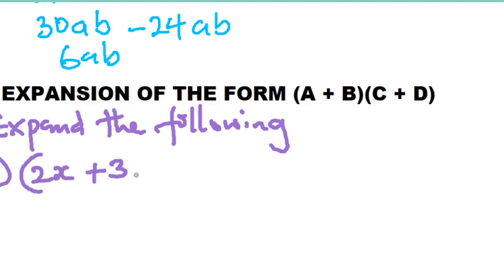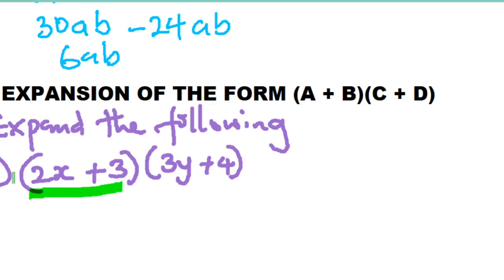Let us solve this. We learned that if you have a bracket with nothing in front of it, and another bracket altogether, these two brackets interact. So 3y + 4 will be multiplied by 2x + 3. There's nothing in between, so this multiplies this — it's like writing (2x + 3) times (3y + 4). The multiplication is not straightforward, so we'll do it the simplest way.